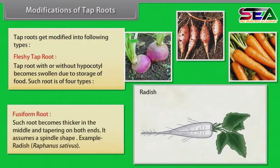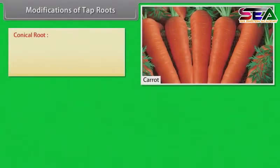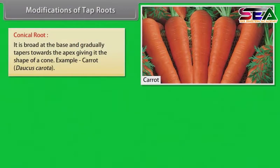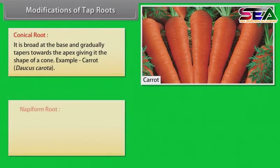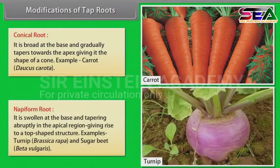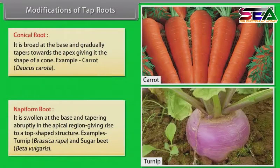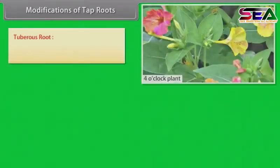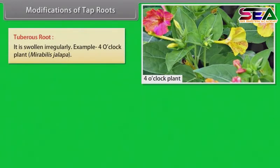Fusiform root: such root becomes thicker in the middle and tapering on both ends, assuming a spindle shape. Example: radish (Raphanus sativus). Conical root: it is broad at the base and gradually tapers towards the apex giving it the shape of a cone. Example: carrot. Napiform root: it is swollen at the base and tapering abruptly in the apical region giving rise to a top-shaped structure. Examples: turnip (Brassica rapa) and sugar beet (Beta vulgaris). Tuberous root: it is swollen irregularly. Example: four o'clock plant (Mirabilis jalapa).